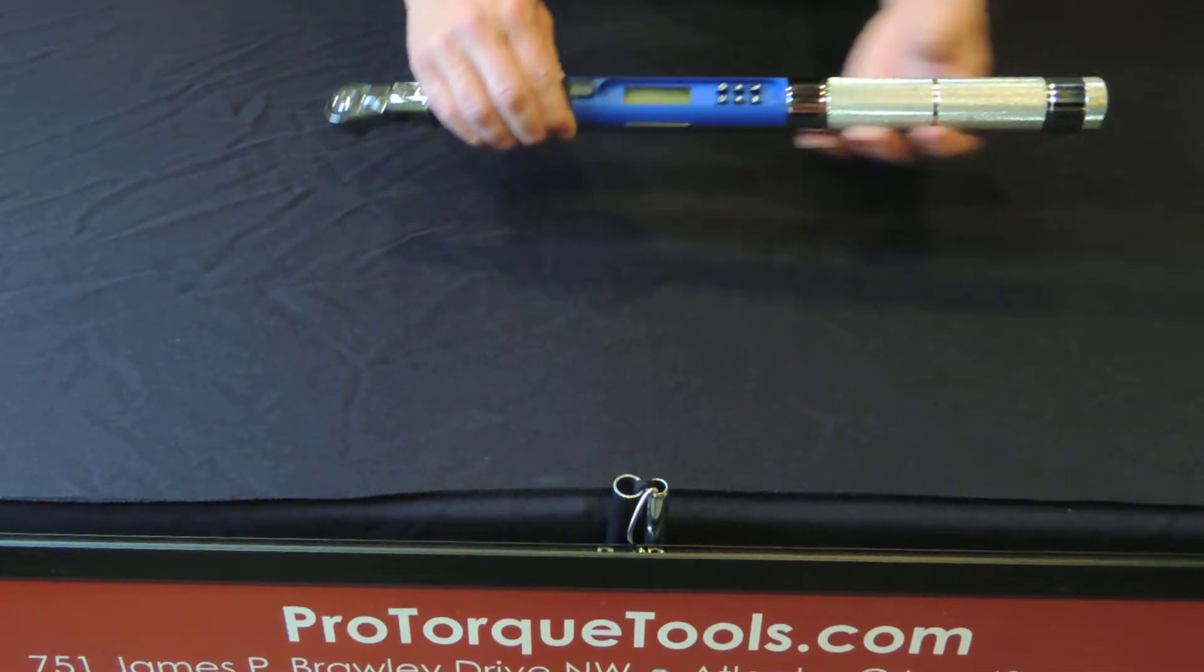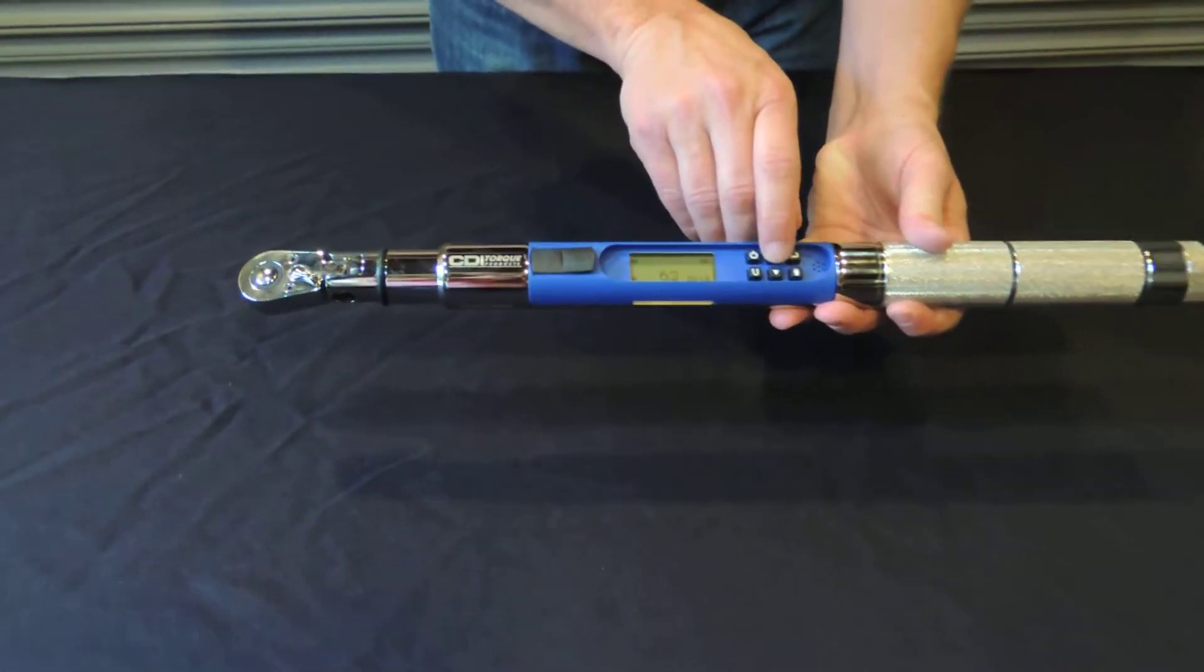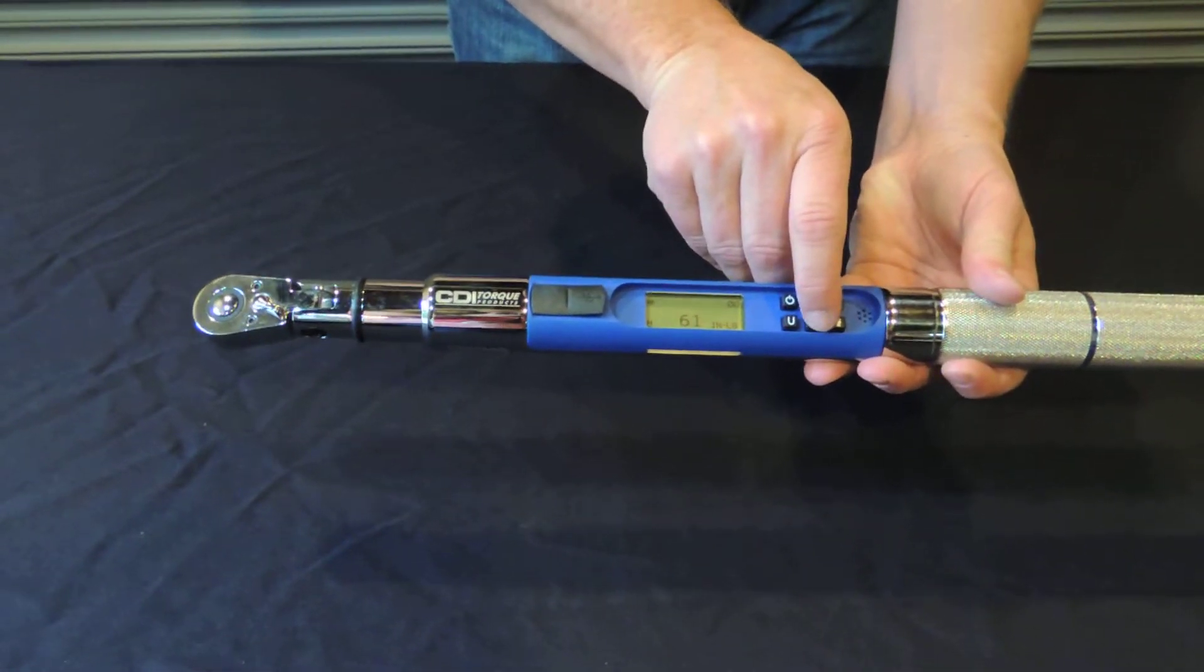This allows you to set the torque levels here in the handle. It has a digital readout.